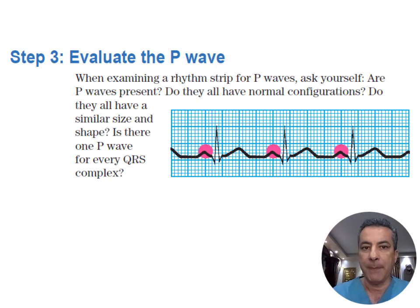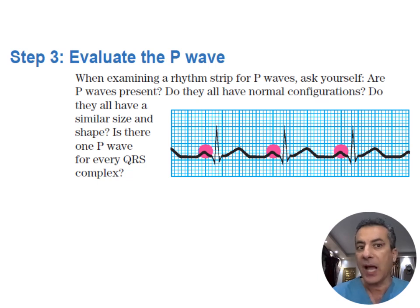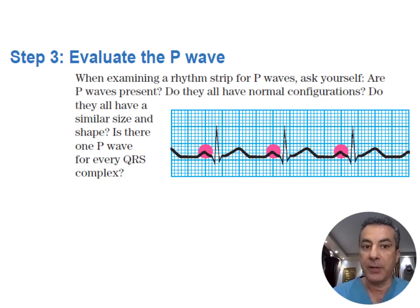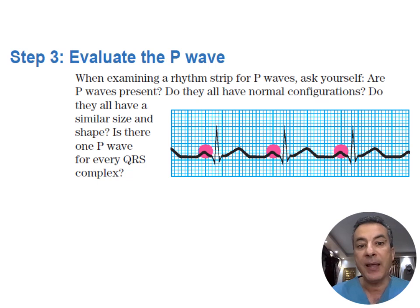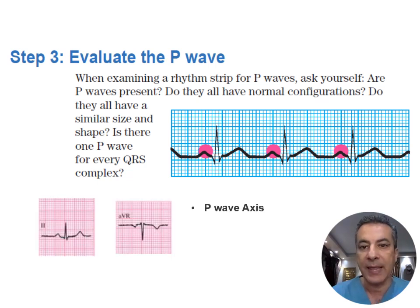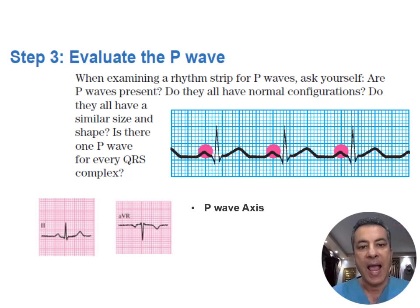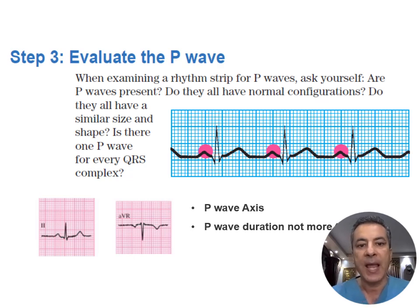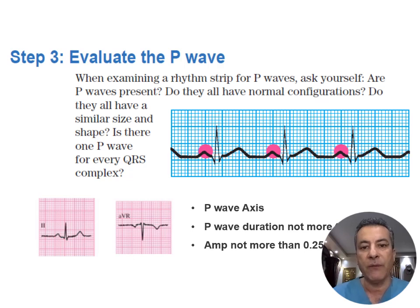The third step is to evaluate atrial activity in the form of the P wave. Ask yourself: is the P wave present, and if not, where might it be concealed? Are the P waves similar? Examine the relationship between the P wave and QRS complexes. Determine the P wave axis, which should be upright in the leftward and inferior leads and inverted in aVR. Assess the duration of the P wave, which should not exceed 120 milliseconds, and the amplitude, which should not exceed 0.25 millivolts.